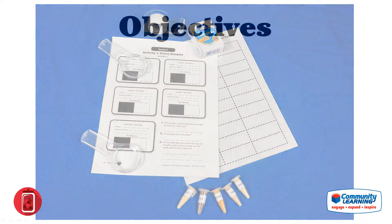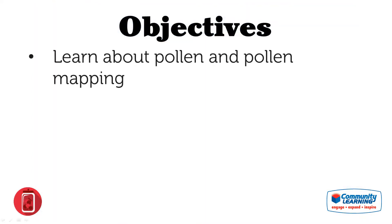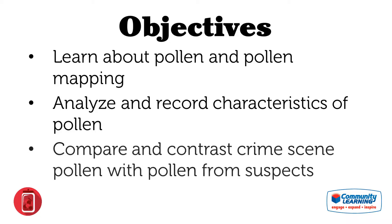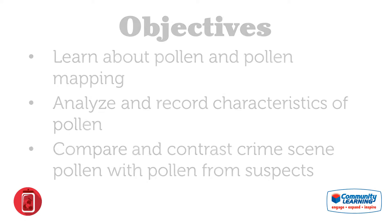In this lesson, students will learn what pollen is and how creating a pollen map can help in forensics. They will analyze and record characteristics of four types of pollen found on the suspect's clothing, and compare and contrast the pollen found at the crime scene with pollen found on the suspect.